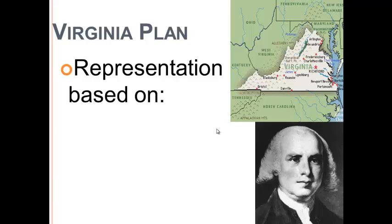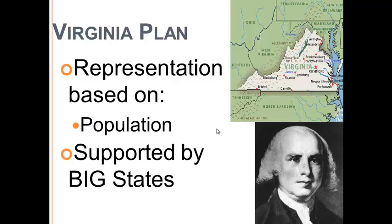One idea that was floated was the Virginia Plan. This talked about the idea of representation, but it would be based on population. Virginia at the time was a larger state population-wise, so this would probably benefit them. It was also supported by other bigger states — South Carolina had quite a few people as well. When we're talking about representation, we're talking about representation in Congress, in the legislative branch. And when we say big states, we don't mean size or geography — we're talking about population of the states.